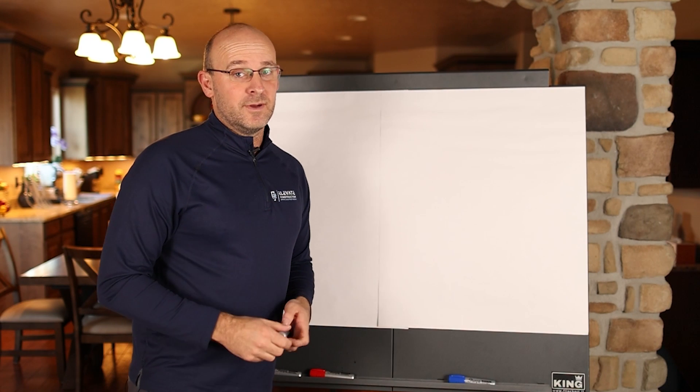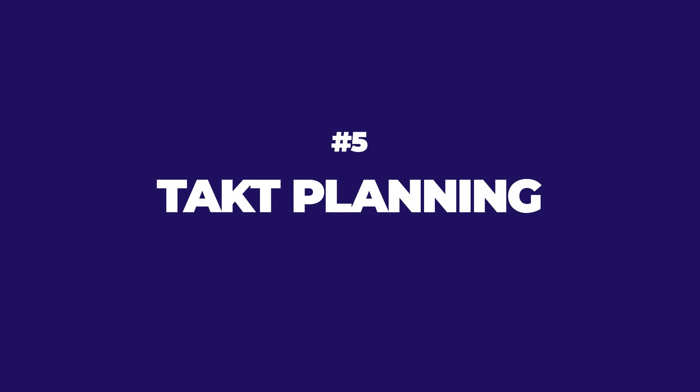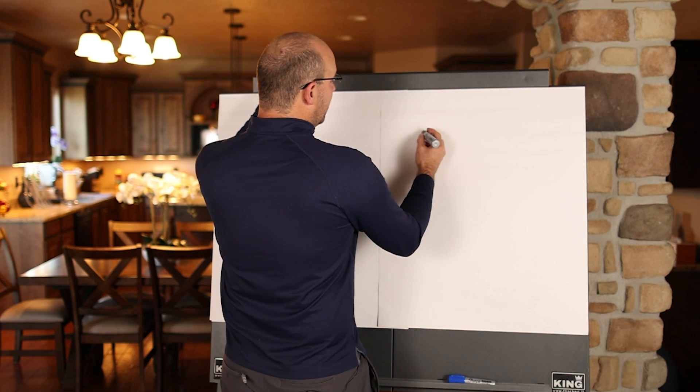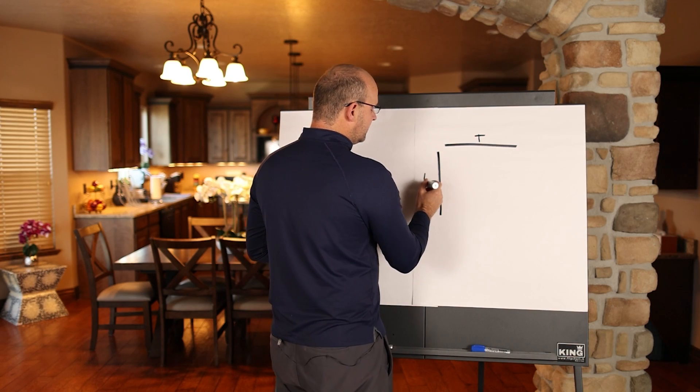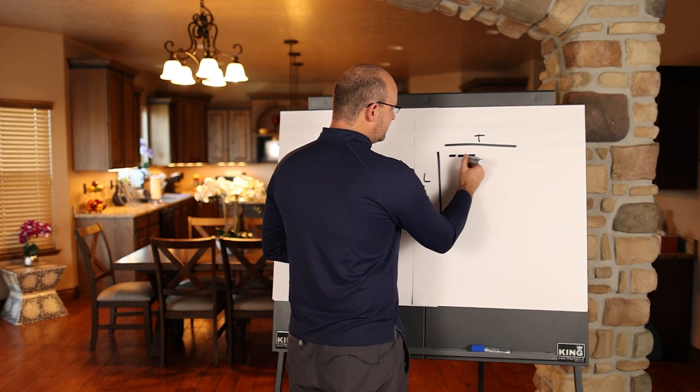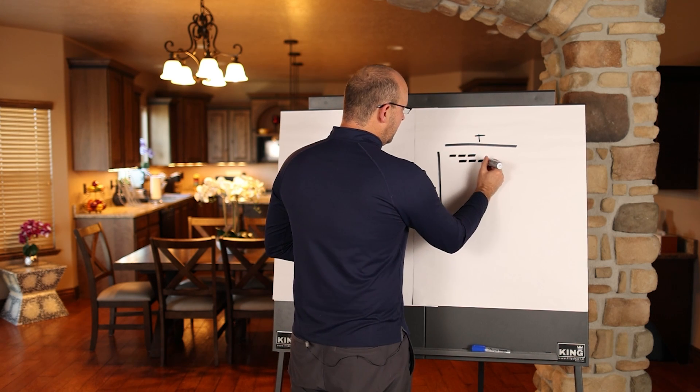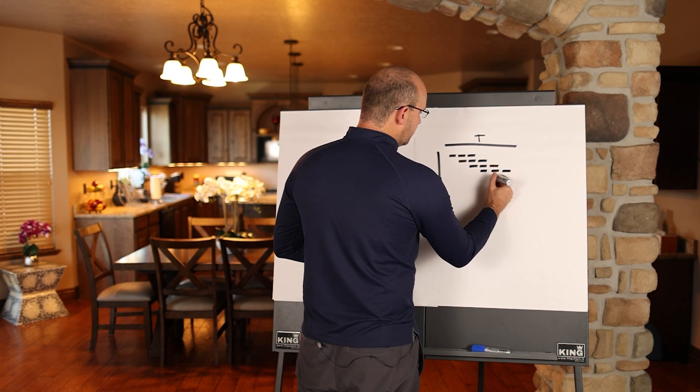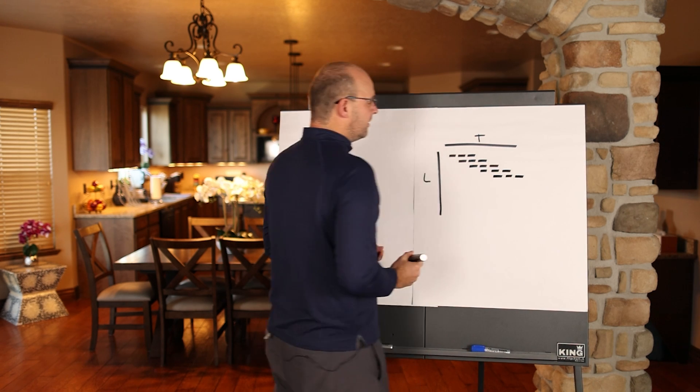So we're now going to talk about my favorite one, which is takt planning. So it merges all of these together. So a takt plan has time on the top, and it has the location on the left. And what it does is it enables you to take a sequence and identify how it flows through zones. And you've seen me talk about this before.